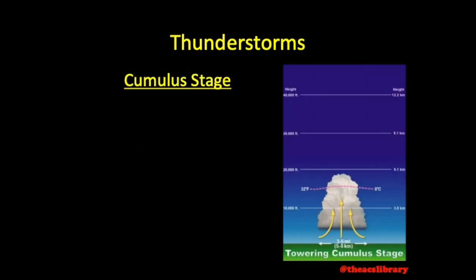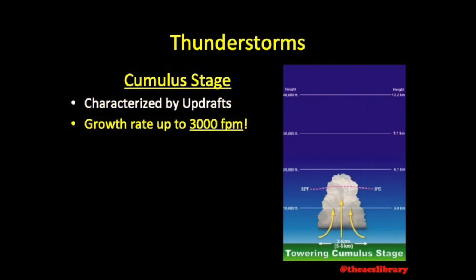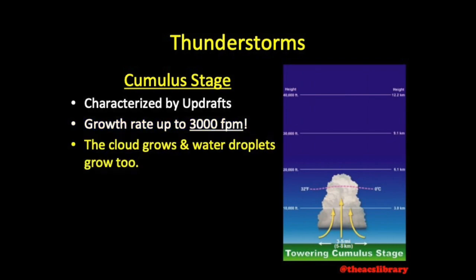The cumulus stage of a thunderstorm is characterized by updrafts extending from the surface to the cloud top. The growth rate of a thunderstorm may be up to 3,000 feet per minute. During this stage, the cloud grows and eventually water droplets within the rain cloud grow too.